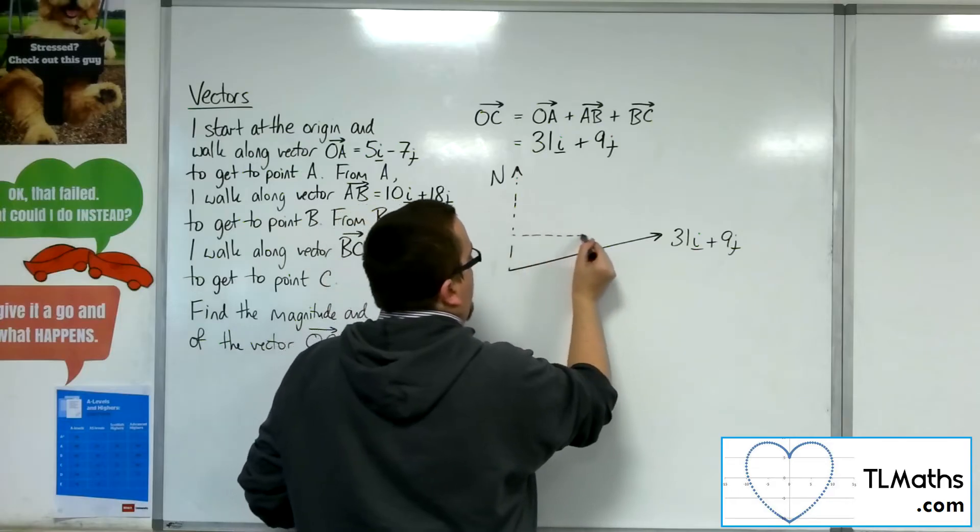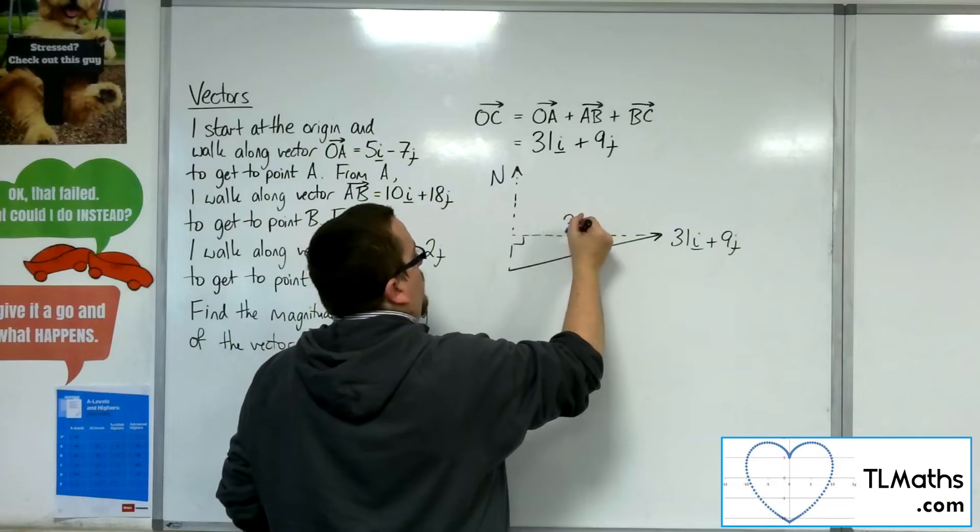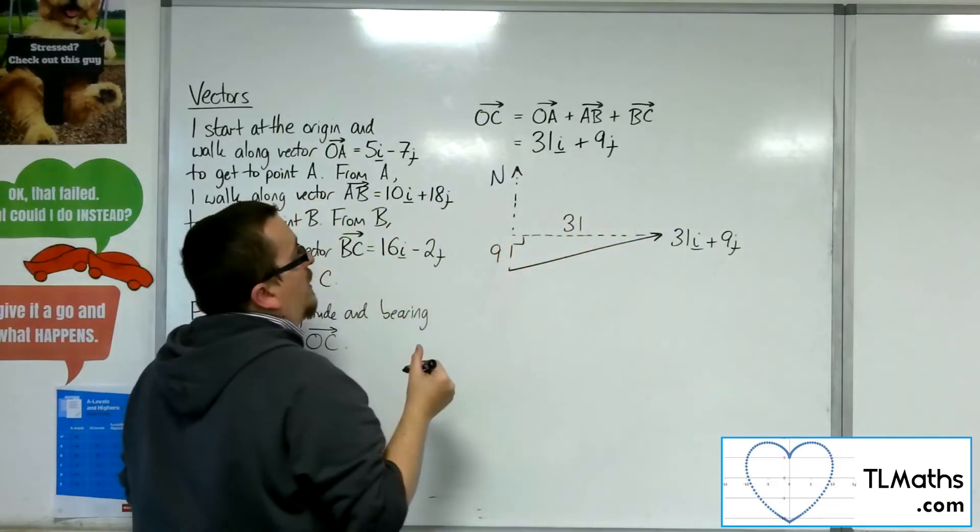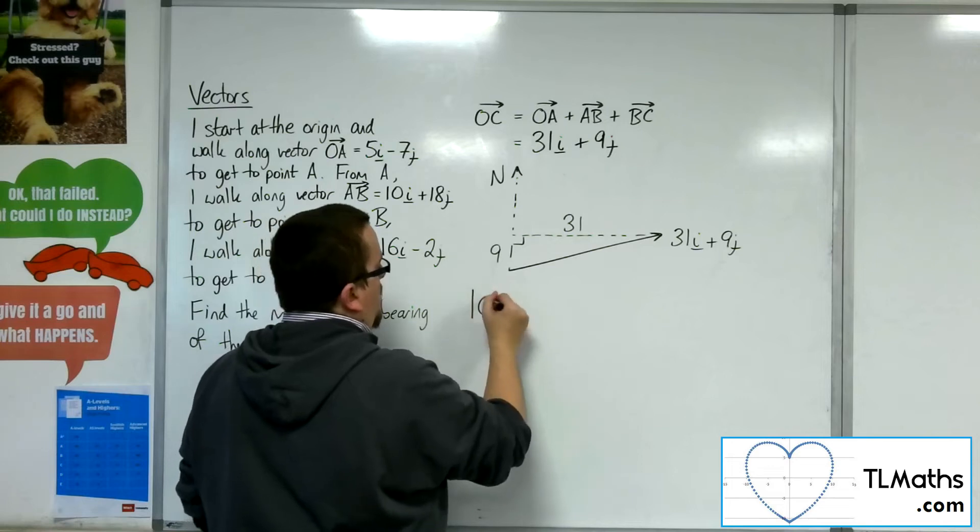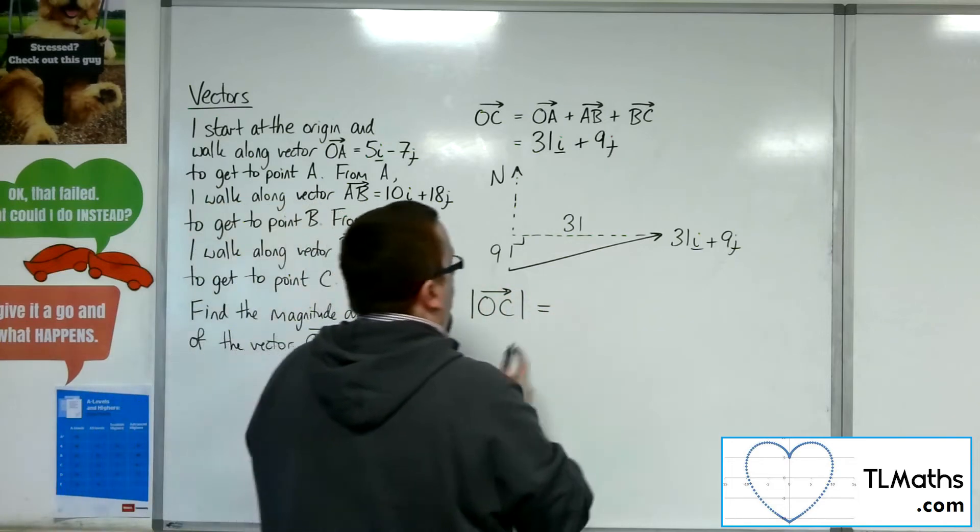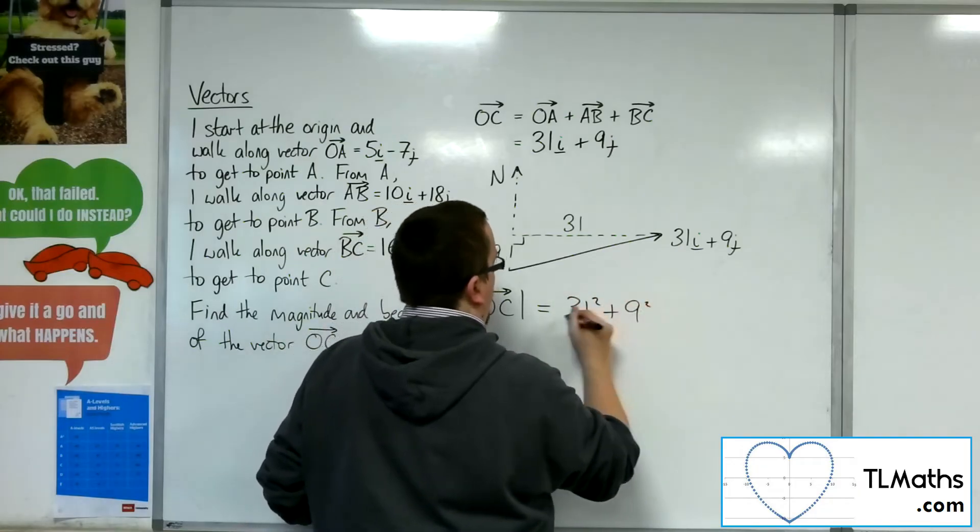So if I draw in a right-angled triangle, then this would be 31, that would be 9. So I can work out the length, the magnitude of OC, by looking at the square root of 31 squared plus 9 squared.